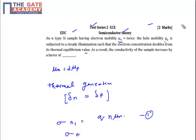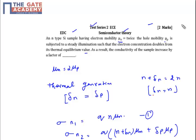Now if the thermal illumination has been done, my new conductivity will be q times (n + Δn) into μn, and because holes are also generated, plus Δp times μp. But the question says that electron concentration is found to be doubled, so n + Δn equals 2n. So value of Δn is basically n, and my Δp is also n.